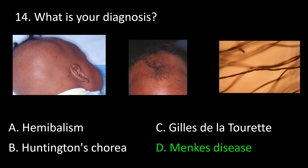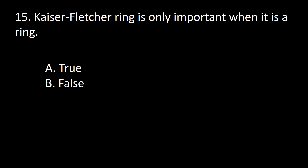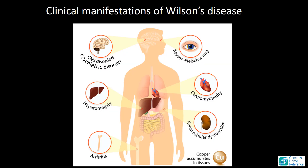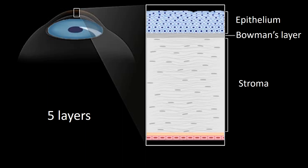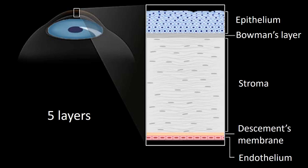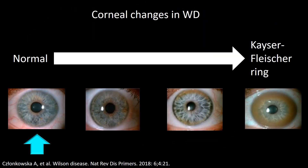Kayser-Fleischer ring is only important when it is a ring — A, true; B, false. Wilson disease is an autosomal recessive disorder affecting many organs. The deposition of copper occurs in the Descemet's membrane of the cornea. The speed of copper deposition is variable, and a full ring is a relatively late finding. Evolution proceeds from no deposition, to minimal deposition, to non-contiguous areas at the upper and lower poles of the cornea, and finally a complete ring.